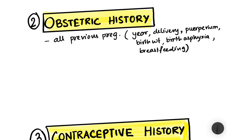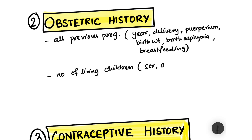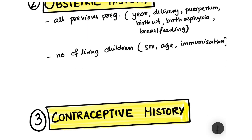You take the history of all pregnancies one by one under these headings: year of pregnancy, mode of delivery, puerperium, birth weight of the baby, whether there was birth asphyxia, and breastfeeding. Then you talk about the number of living children — recorded in terms of their sex, age, and immunization status. These two headings — all previous pregnancies and number of living children — make up the obstetric history.